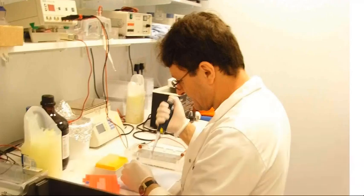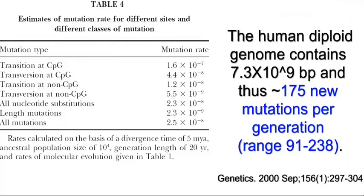Human mutation rates are about 1 in 200 million bases. That's a pretty low probability until you consider that we have about 7 billion bases per diploid genome. It works out that every human alive has statistically somewhere around 175 mutations that did not exist in either parent.